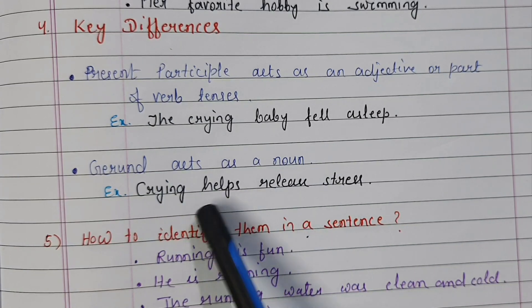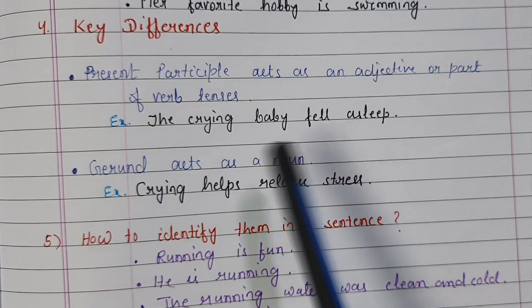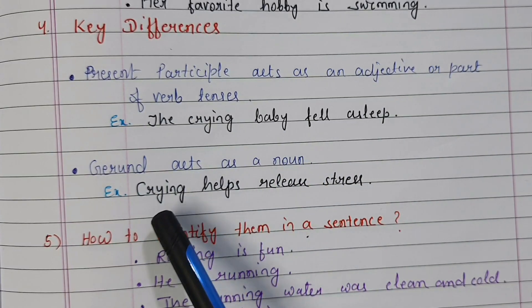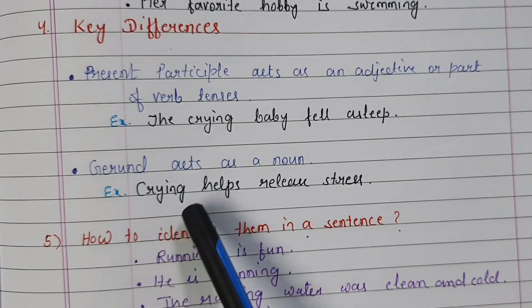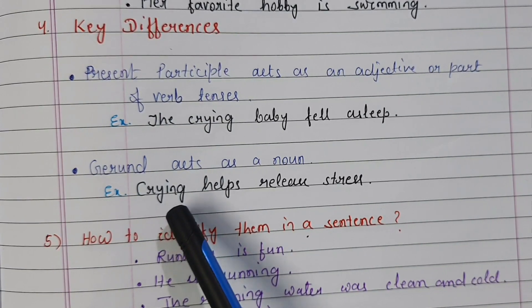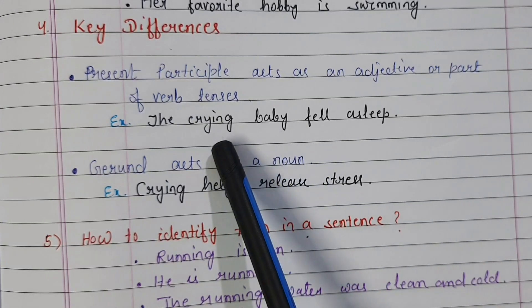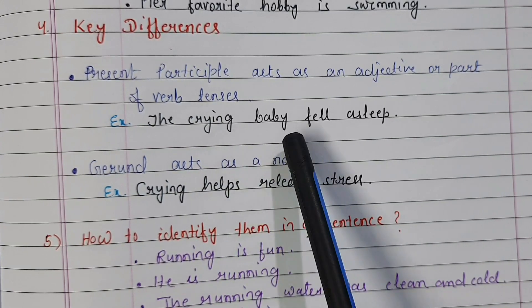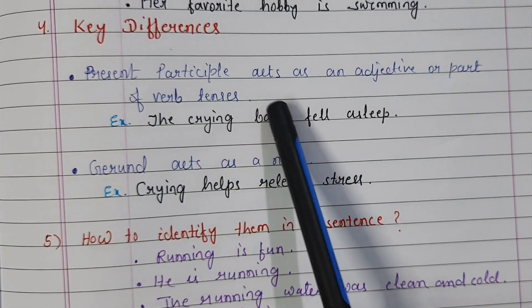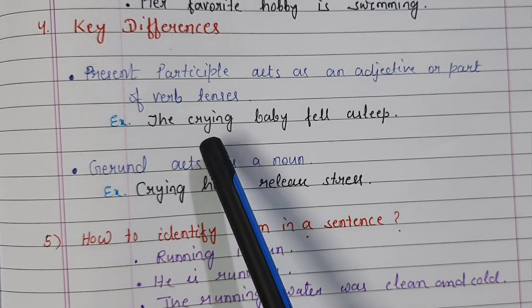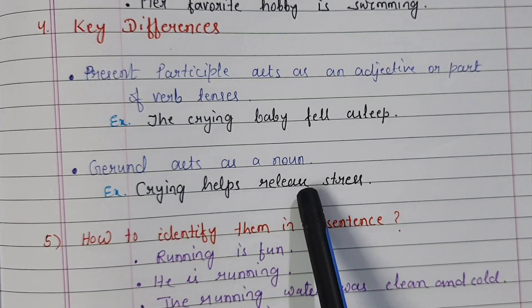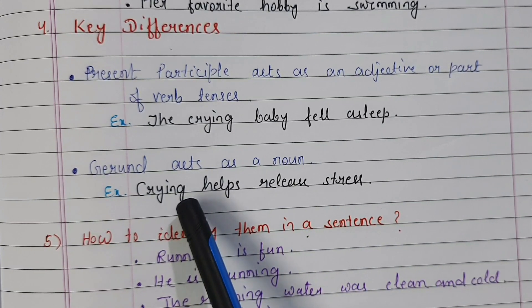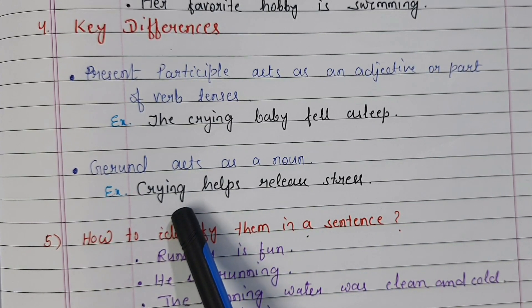Gerund acts as a noun. 'Crying helps release stress.' The same word — crying — but here crying acts as the subject of the sentence. Crying is the subject, so crying is a gerund. In 'the crying baby fell asleep,' crying describes baby, so it is an adjective — present participle. In 'crying helps release stress,' crying is the subject, so it is a gerund.